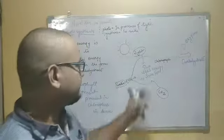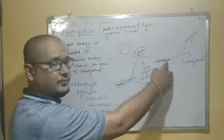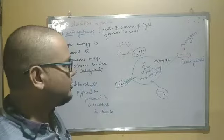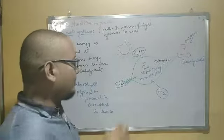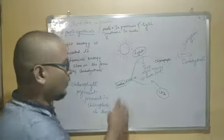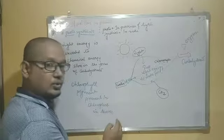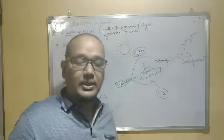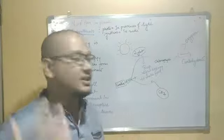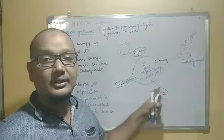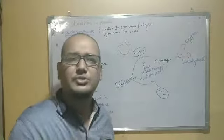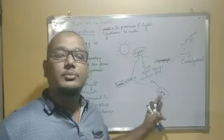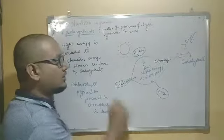This chlorophyll will trap the light energy. The raw materials are water, which comes through the roots to the stem, branches, and leaves, and carbon dioxide from the surrounding, which enters through stomata. Stomata are small microscopic pores present in the leaf. By the process of diffusion, CO2 enters and water goes out.